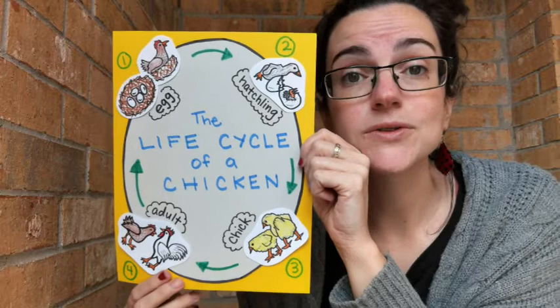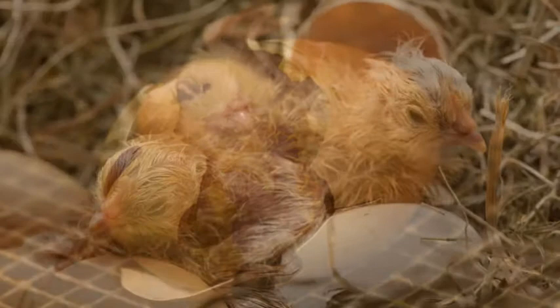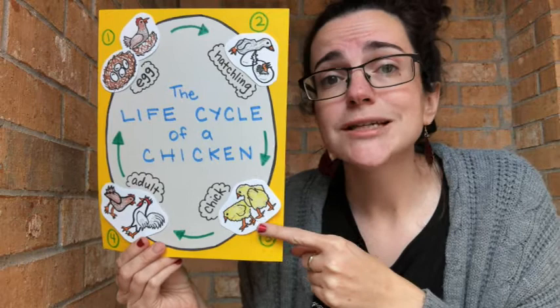Hatchlings are breaking out of those eggshells, and they look completely different compared to adult chickens. They're kind of grayish in color, very weak, they can't fly, they can barely walk. But eventually they're going to grow into chicks — really, really yellow, fluffy, cute baby chicks.